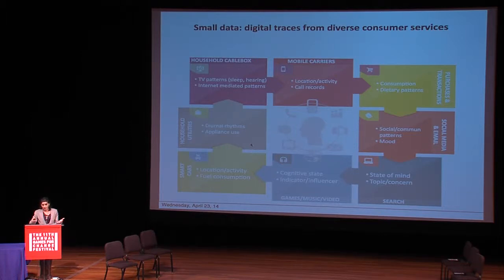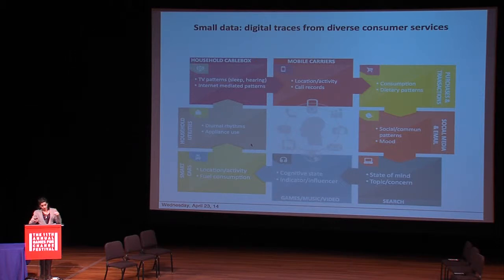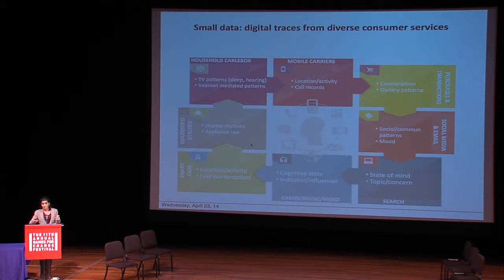Your cable TV box or your Nest box, your home utility information, is a complementary source of information that might give you additional and finer details about your diurnal rhythms at home. Your loyalty cards and your online grocery shopping have very rich information — maybe the richest information — about if not what food you're actually consuming, at least what food you're actually purchasing in a repeated manner.